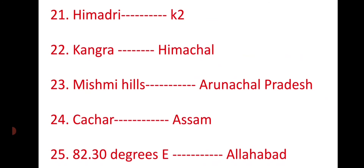Himadri is another name for the Greater Himalayas. Kangra Valley is located in Himachal Pradesh. In Arunachal Pradesh, the Siwalik Hills are called Mismi Hills. In Jammu, they are called Jammu Hills. The 82 and a half degrees eastern longitude is taken as the Indian Standard Meridian. It passes through Allahabad, whose recent name is Prayagraj.